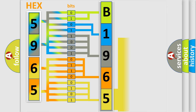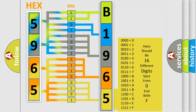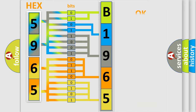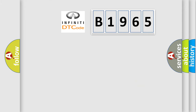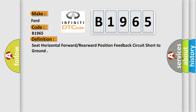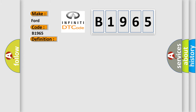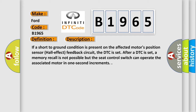A single byte conceals 256 possible combinations. We now know in what way the diagnostic tool translates the received information into a more comprehensible format. The number itself does not make sense to us if we cannot assign information about what it actually expresses. So, what does the diagnostic trouble code B1965 interpret specifically for Infiniti car manufacturers? The basic definition is: seat horizontal forward or rearward position feedback circuit short to ground.